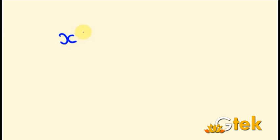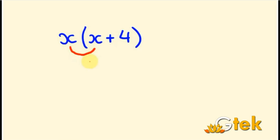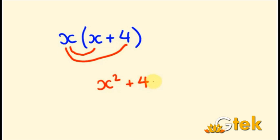The next example is x open bracket x plus 4. So we have to multiply x into x. x into x is multiplied, and we will get x squared. Plus x into 4 is 4x. So the answer is x squared plus 4x.